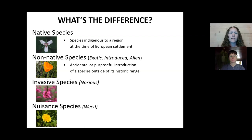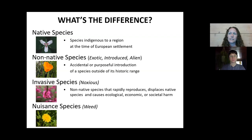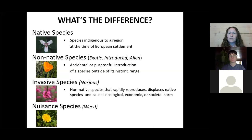An invasive species is a non-native species that has certain characteristics: it rapidly reproduces, it tends to displace native species, and it has to have some sort of harm — whether to ecology, economics, or society. A last term we sometimes use is nuisance species — one that can be either native or non-native but just interferes with human activities in some way.